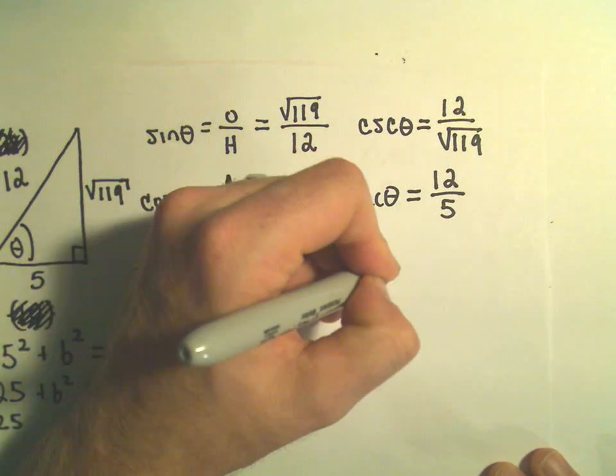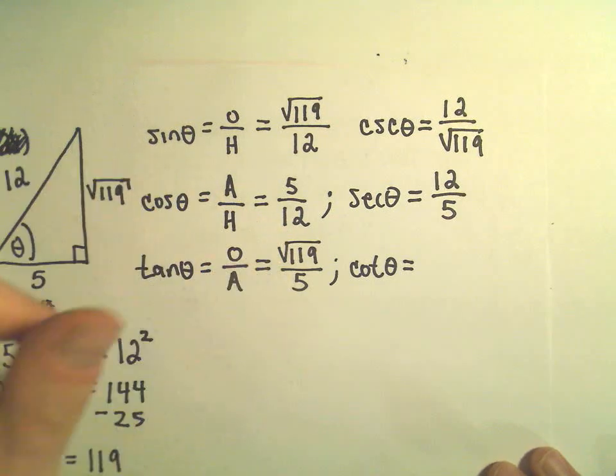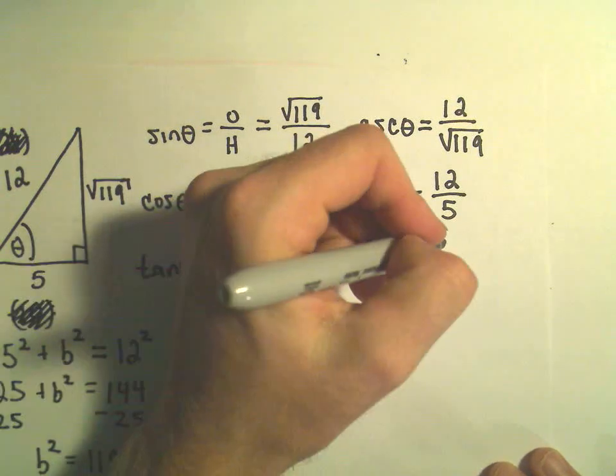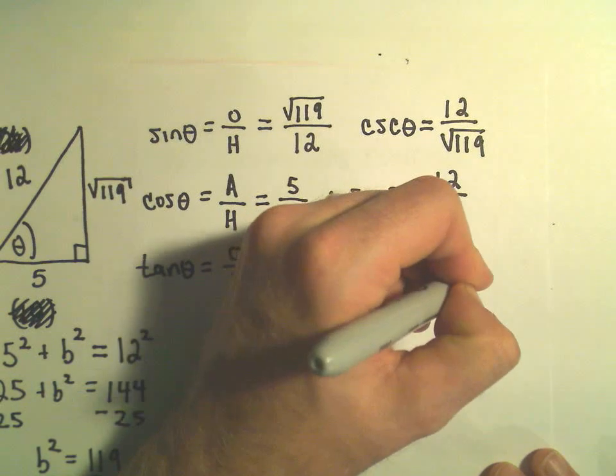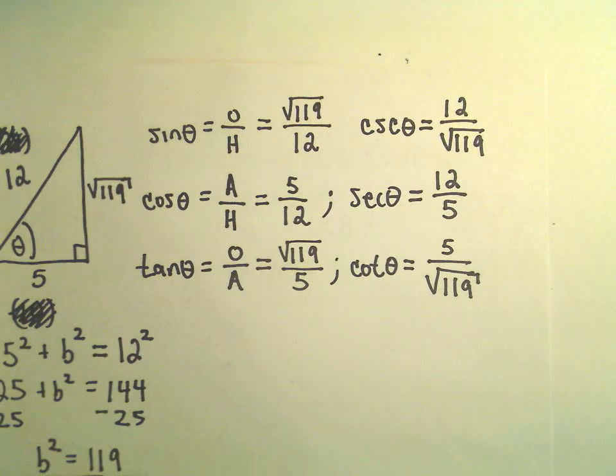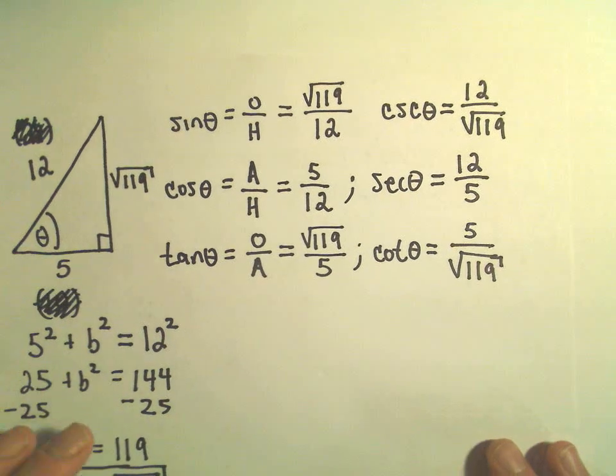And likewise, cotangent of theta, all we have to do is just take our fraction that we have for tangent of theta and flip that over. And now you have all of the ratios of the sides of the triangle.